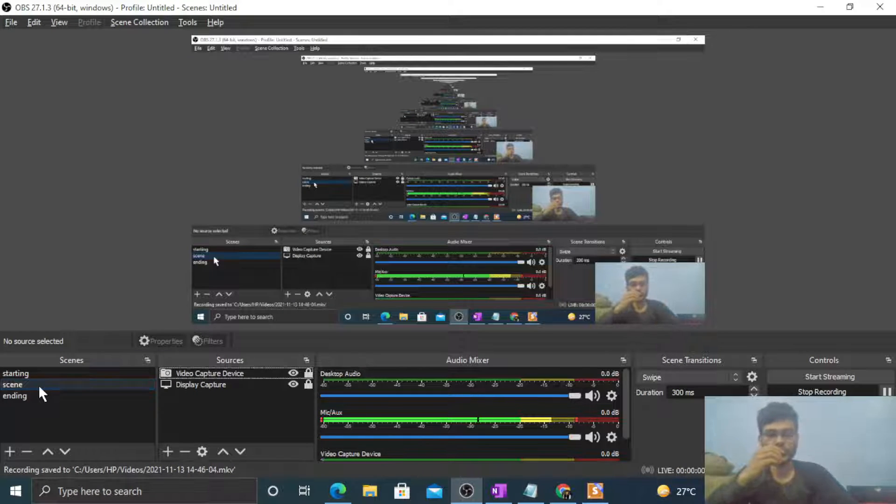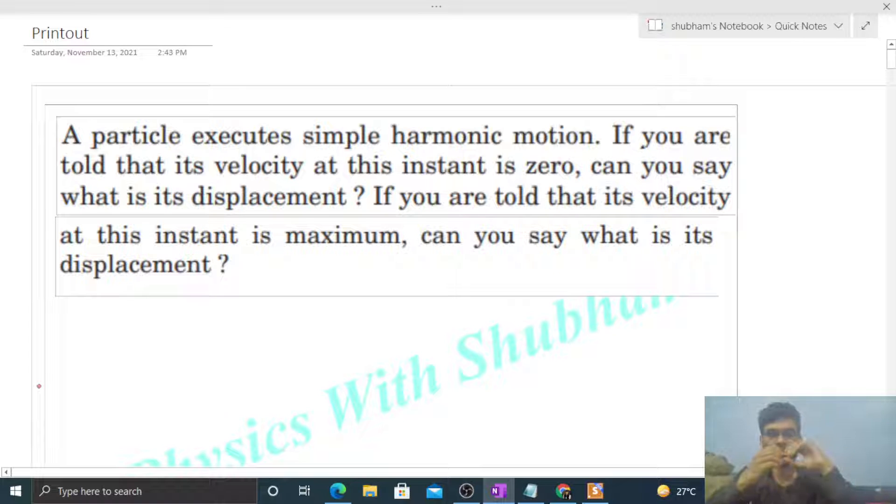Okay, hi everyone. So today let's discuss this interesting problem. It says a particle executes simple harmonic motion. If you are told that its velocity at this instant is zero, can you say what is its displacement? If you are told that its velocity at this instant is maximum, can you say what is its displacement?